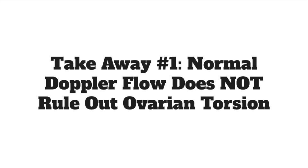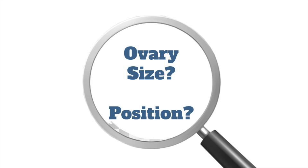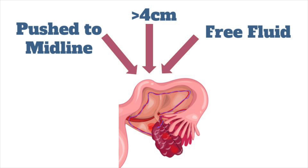If the ultrasound only mentions arterial flow, you have to dig deeper. What else can you use to diagnose torsion on ultrasound? The majority of cases of torsion occur in patients with abnormal ovaries, so combined ultrasound findings are probably more helpful. Rather than just focusing on blood flow, ovary size and position are important. An ovary pushed towards the midline, an ovary more than 4 centimeters in size, and pelvic free fluid are also ultrasound findings that suggest torsion.